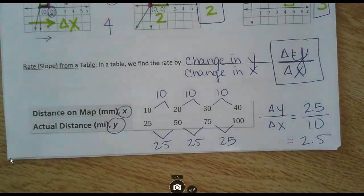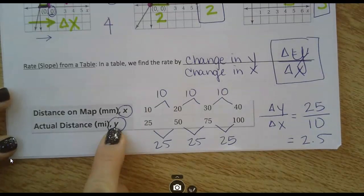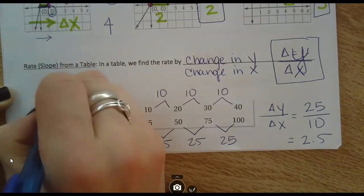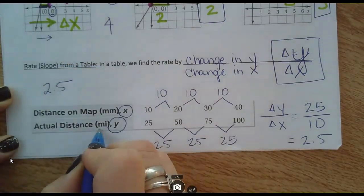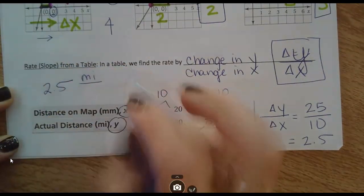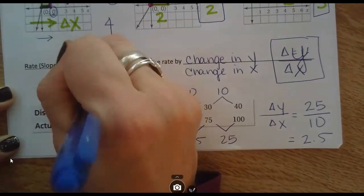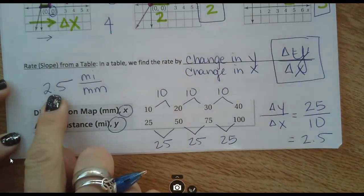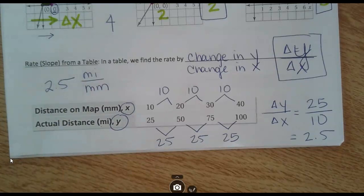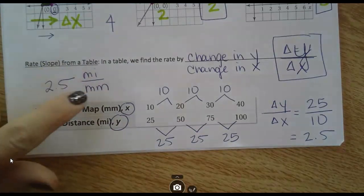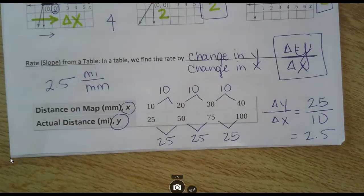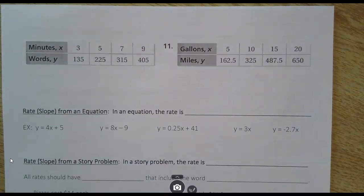We should label this as well. We know that our slope or our rate is y over x. So this is 2.5 miles over millimeters - 2.5 miles between the cities for every millimeter on the map.